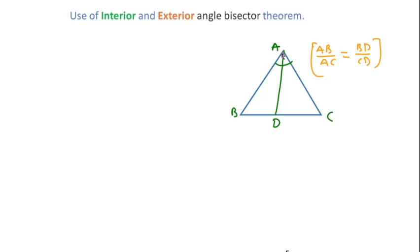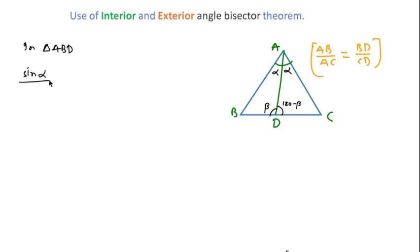In triangle ABD, if I consider this angle is alpha then this angle should also be alpha, and if I consider this angle is beta then this angle should be 180 minus beta. By using the sine rule in triangle ABD we can write: sine alpha over BD equals sine beta over AB, and if we cross multiply then AB sine alpha equals BD sine beta.